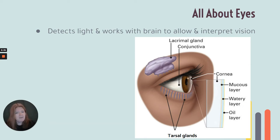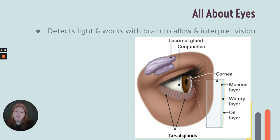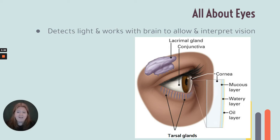And then we have tears, but tears are not simply just water — they actually have three main components. One component comes from the lacrimal glands, located on the superior lateral part of your eye. They produce the watery part of tears that you would normally think of as tears. Then we have the conjunctiva, which is a thin, clear membrane that covers the sclera — the white part of your eye — and it has glands that produce mucus, forming the mucus layer of tears.